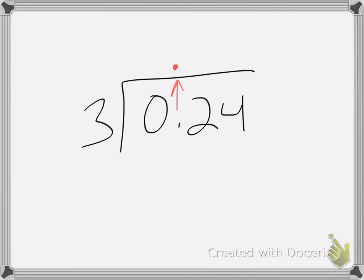So 3 goes into 0 zero times, 3 goes into 2 zero times. So now I need to think, 3 goes into 24 how many times? 3 goes into 24 eight times.